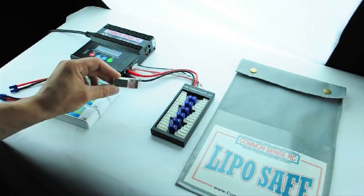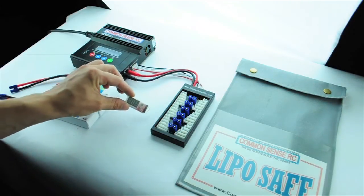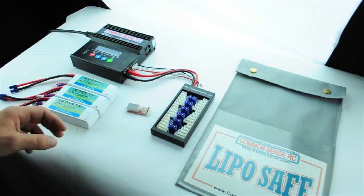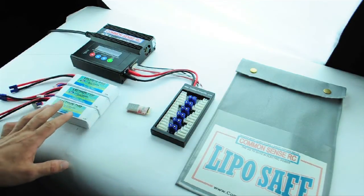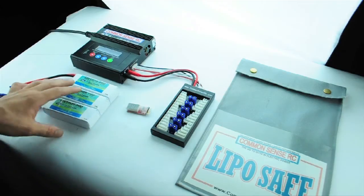The following procedures apply to all the Common Sense RC para boards, but there are a couple exceptions which we will address shortly. The first thing we need to do is check the actual voltages of each cell in the pack.